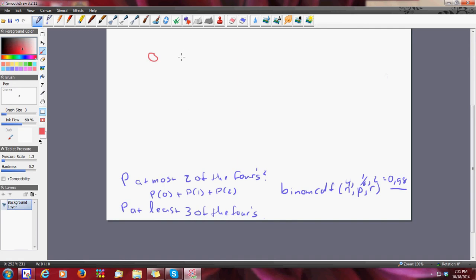So, here's what I can have. The calculator always starts with the cumulative frequency function, it always starts from zero and goes up. So, if I want to find at least three of the fours, it's going to be three or four.